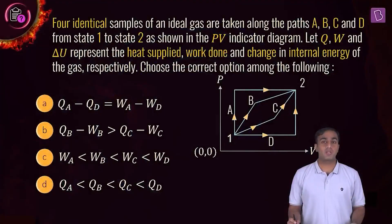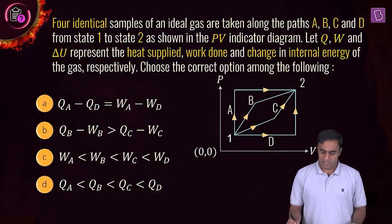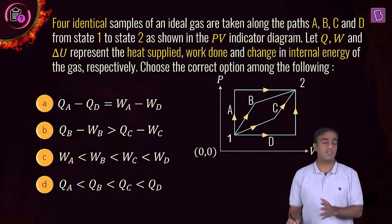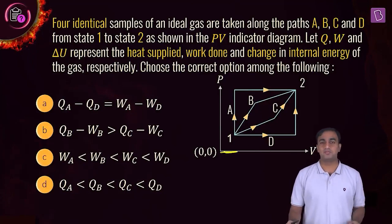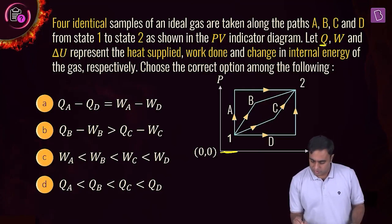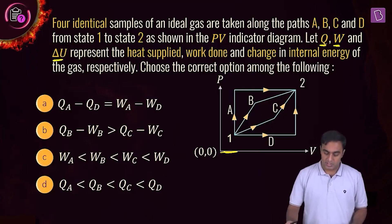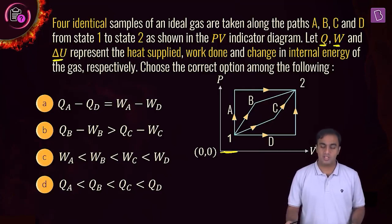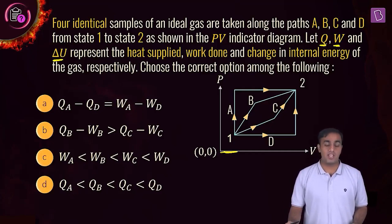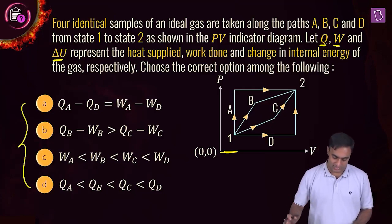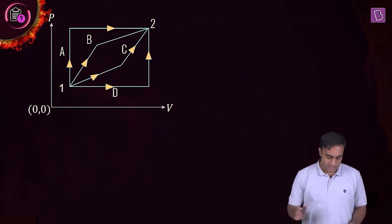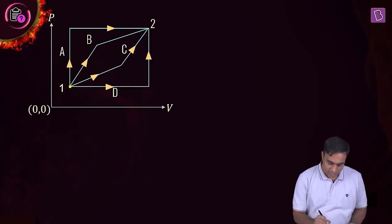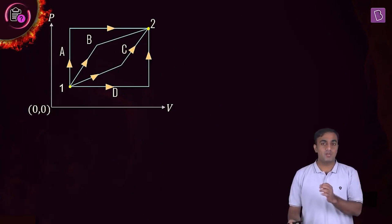Next, we have a question based on the application of the first law of thermodynamics. We are given four identical samples of ideal gas taken through paths A, B, C, and D from state 1 to state 2, as represented on a pressure versus volume graph. Q, W, and ΔU represent the heat supplied, work done, and change in internal energy respectively. Looking at the graph, the thermodynamic state at the beginning and end remains the same for each of these processes.